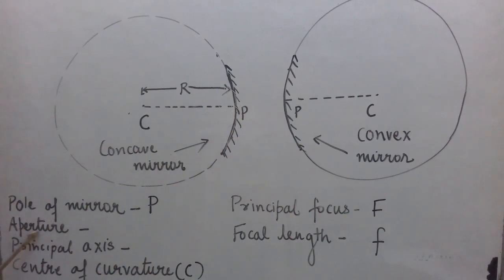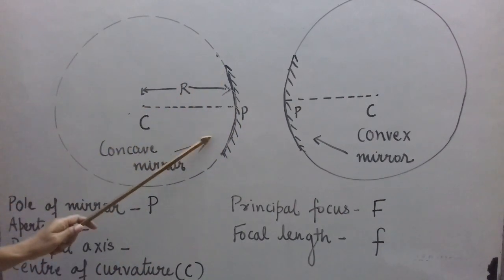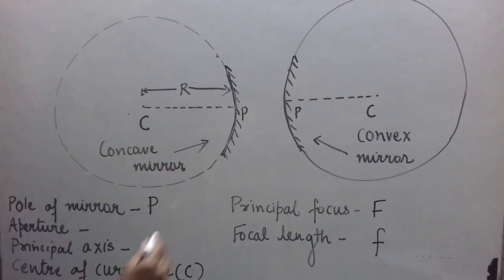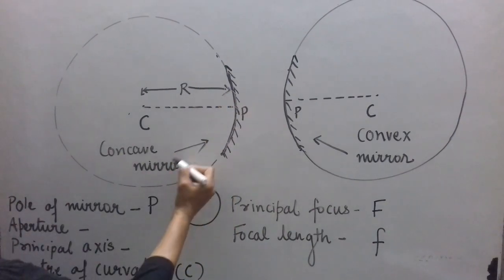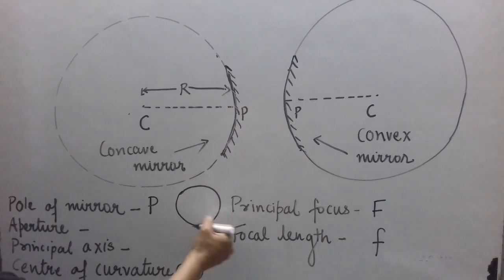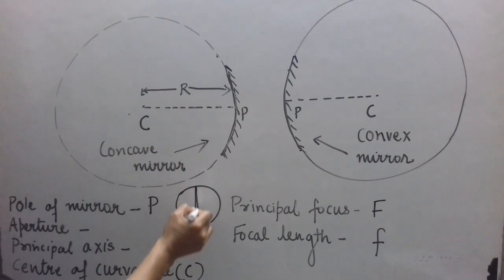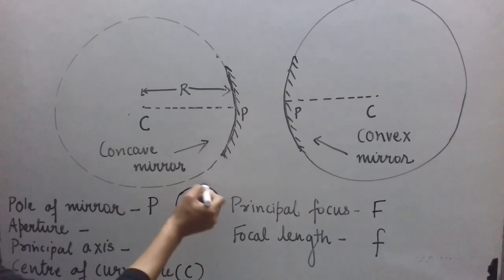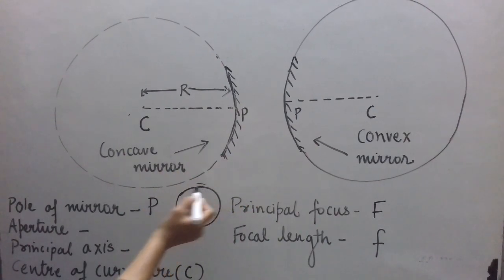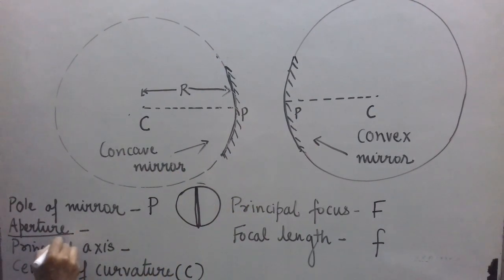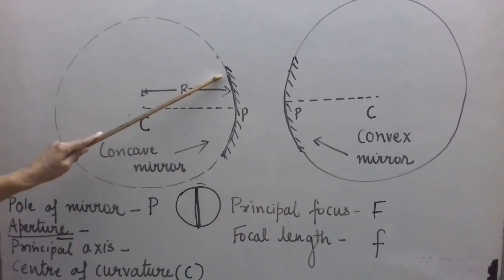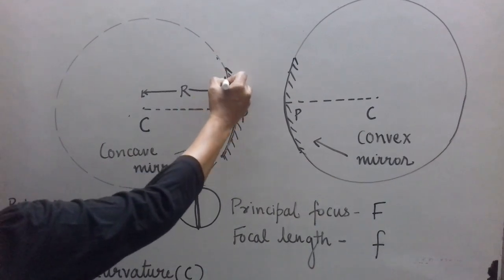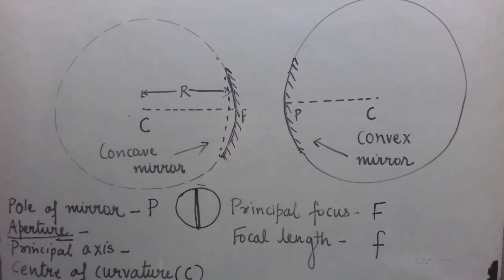Aperture: when you see a concave or convex mirror from the front, the outline boundary is circular. The diameter of this outer circular boundary — or the diameter of the reflecting surface — is called the aperture of the spherical mirror.